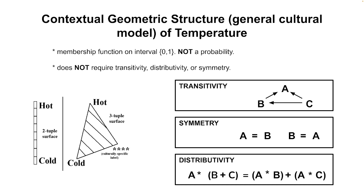This comes from some work we've done on contextual geometric structures — a general cultural model of temperature. We have our hot and cold as a one-dimensional scale, and then we have other anchors that can mediate that scale. We can put that into a geometry to represent the position in this space. Unlike the transitivity example, cold doesn't necessarily transfer to hot in a fixed way — we can have multiple sets of relationships, they may not be symmetrical, and things can be distributed.